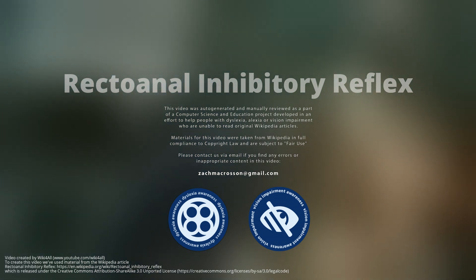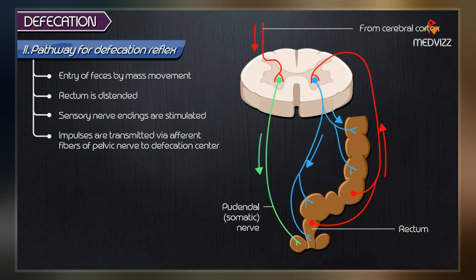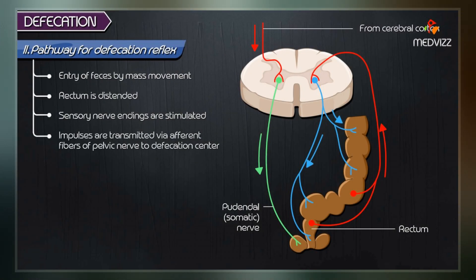The rectoanal inhibitory reflex is a reflex characterized by a transient and voluntary relaxation of the internal anal sphincter in response to distension of the rectum.